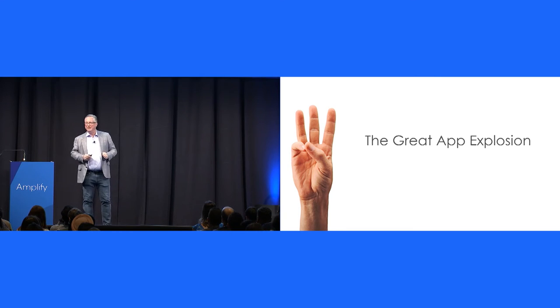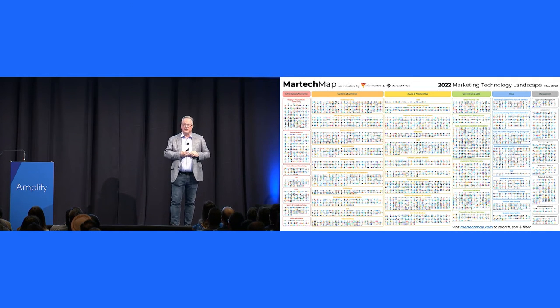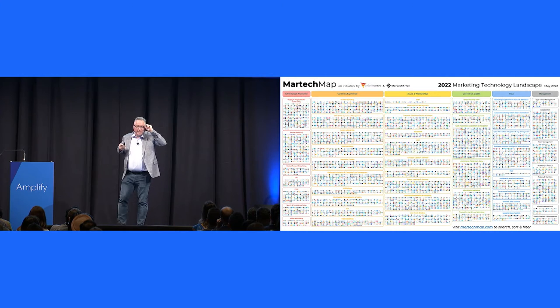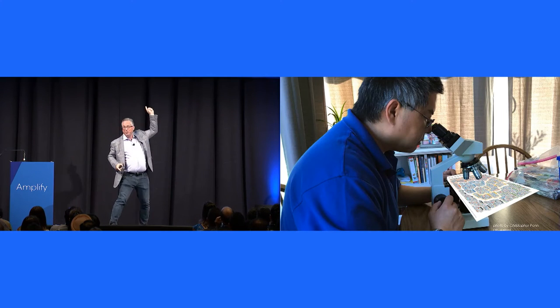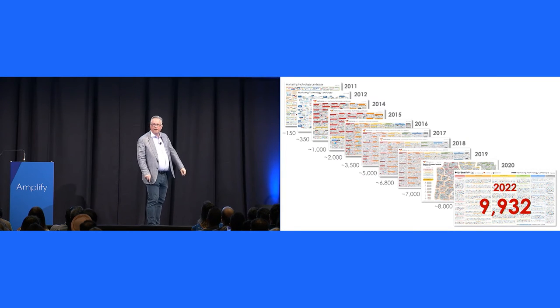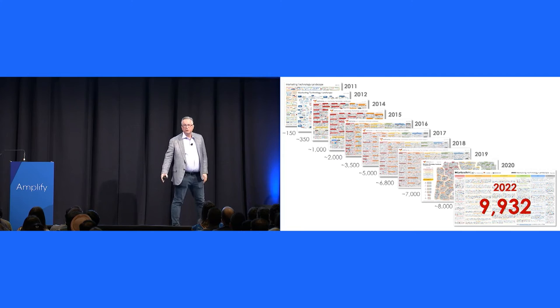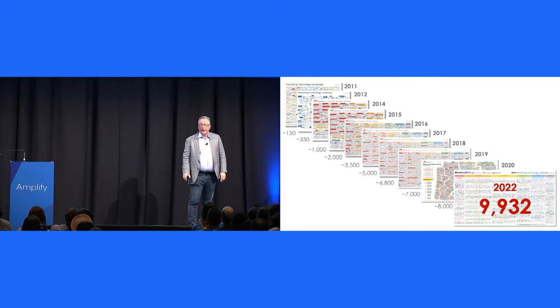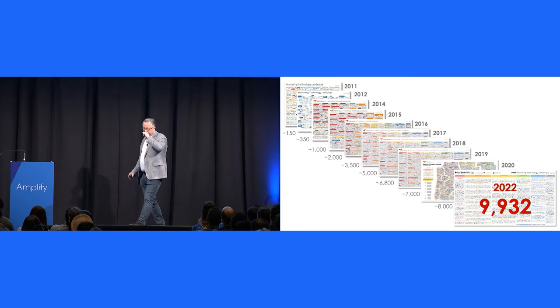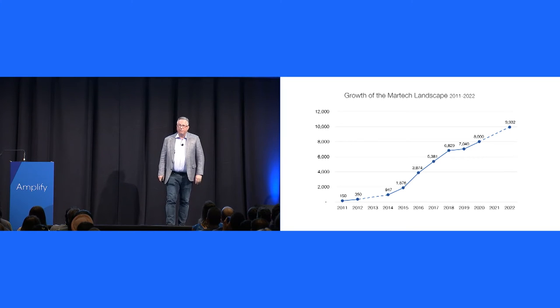All right, onward, trend number three, the great app explosion. We just released the latest version of the marketing technology landscape a couple weeks ago. You can read these things, right? Like here, you just need the proper equipment, and then you're good. Holy cow. Over the decade or so I've been doing this project, it went from like 150 on a slide, which seemed like a heck of a lot at the time, to this most recent one was 9,932. And if I told you how many angry emails we've gotten from all the people we've missed at this point, it's incredible. This has been like 5,000 some odd percent growth over this time frame.